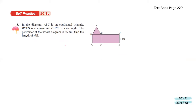Next, for number three, in the diagram, ABC is an equilateral triangle, which means this length is the same. BCFG is a square, which means this is also the same length. And CDF is a rectangle. The perimeter of the whole diagram is 65 centimeters. Find the length of GE. Since this is a rectangle, the same length over here will be over here — so here is 7, 7, and here is also 7 and 7. Since we do not know this part, we label it as x, and here will also be the same length — another x. The perimeter is 65 centimeters as mentioned in the question.